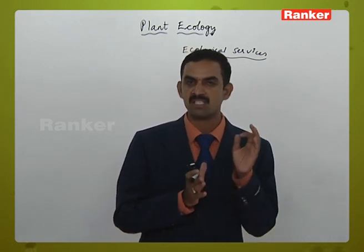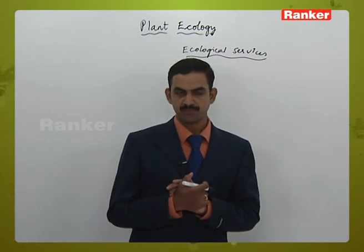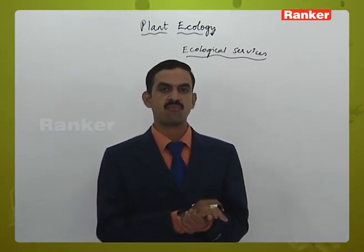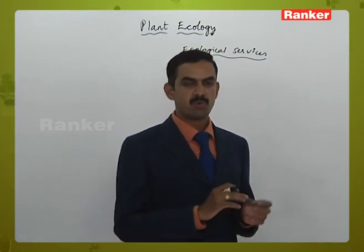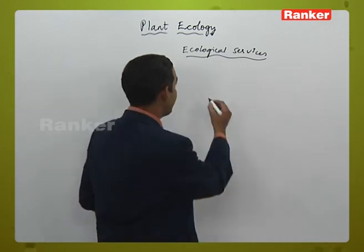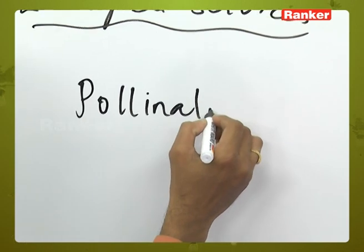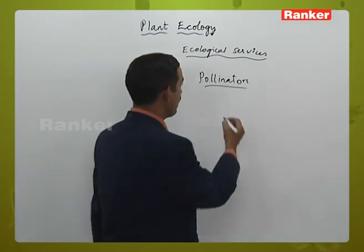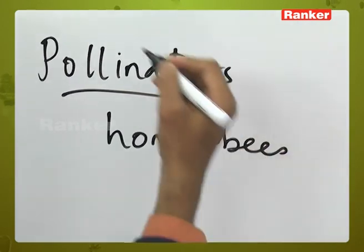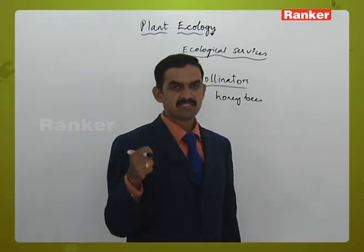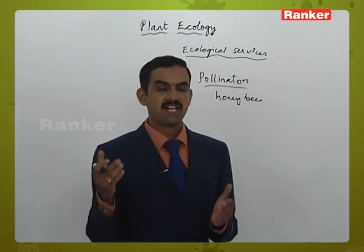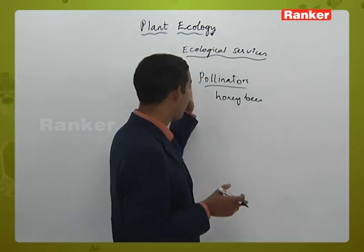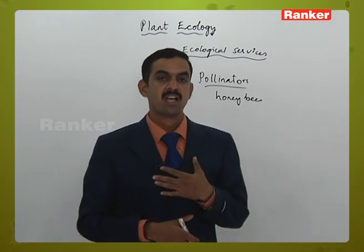Various types of uses we take from the environment fall under these four services. We get food from plants, mostly fruits, which are produced as a result of fertilization. Before fertilization, the important process of pollination must take place. In ecological services, we must talk about pollinators — the most important pollinators are insects, and among insects, honeybees play a very important role as pollinators, helping in pollinating flowers that give rise to fruits used as food.